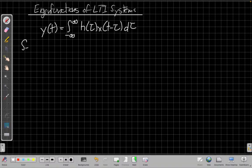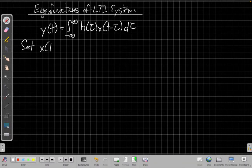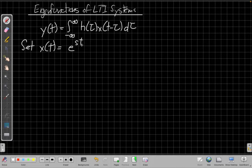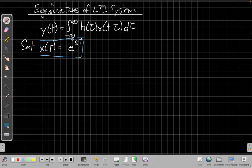So let's look at what happens if we set the input to be a function e to the st. And this question came up in class the other day when we were working on differential equations and someone asked, well why do we often guess e to the st for the answer for the homogeneous solution? And we'll see that's because for LTI systems it turns out to be an eigenfunction, so it's a natural solution to differential equations. So if we plug this into our equation above, I'm going to put this in for x of t.